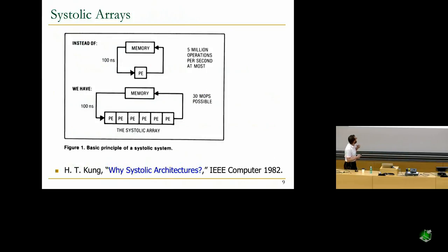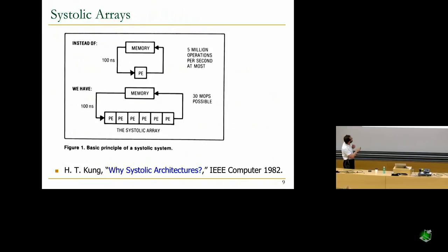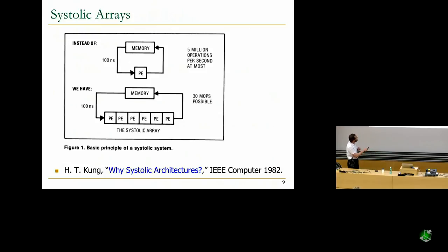Pictorially, instead of every time you output some data from the processing element going back and reloading the data from memory, you chain the processing elements. The output of this processing element is directly supplied to the next, then the next, and eventually when you're done you output the data. As you can see in this picture, a single processor might give you 5 million operations per second at most, whereas here you get 30 million operations per second because you actually do six things on a piece of data as opposed to one. That's the idea — very simple.